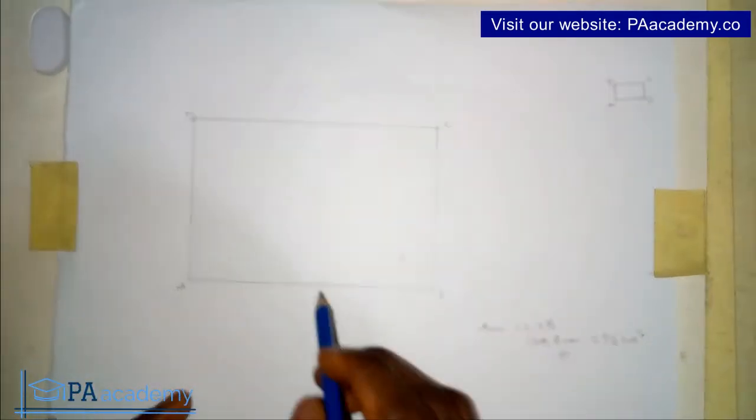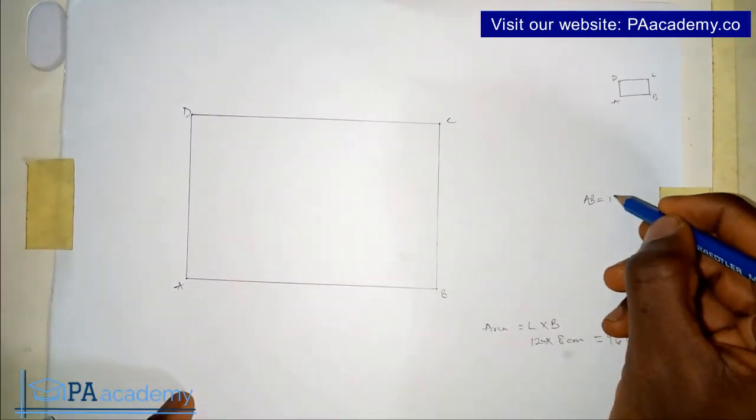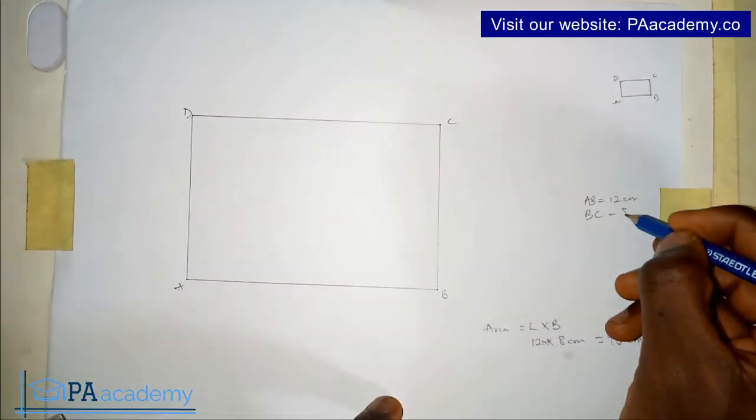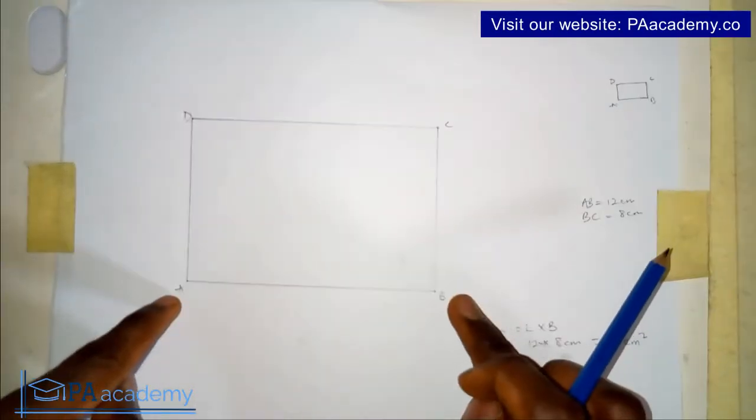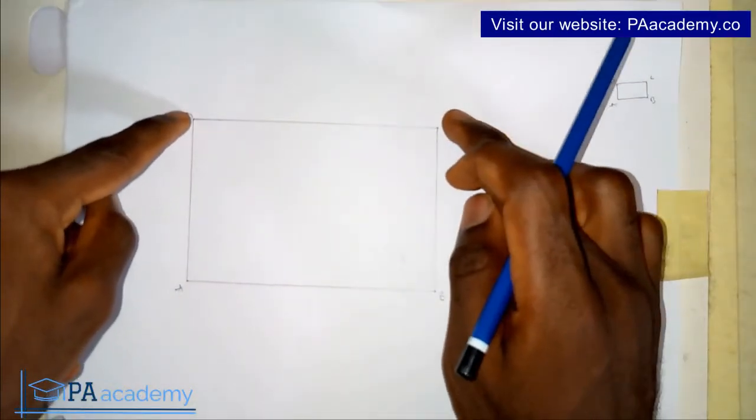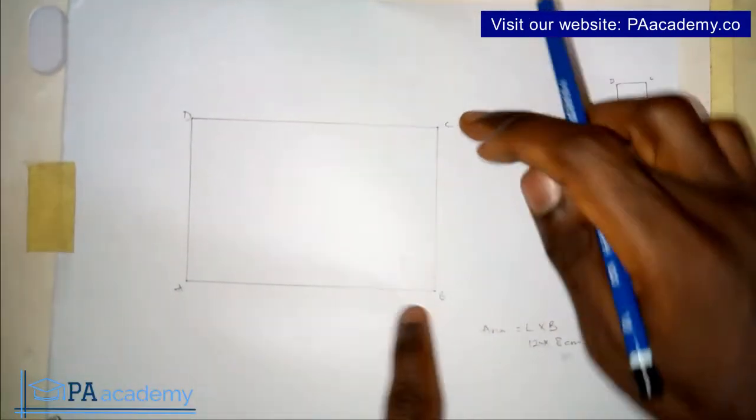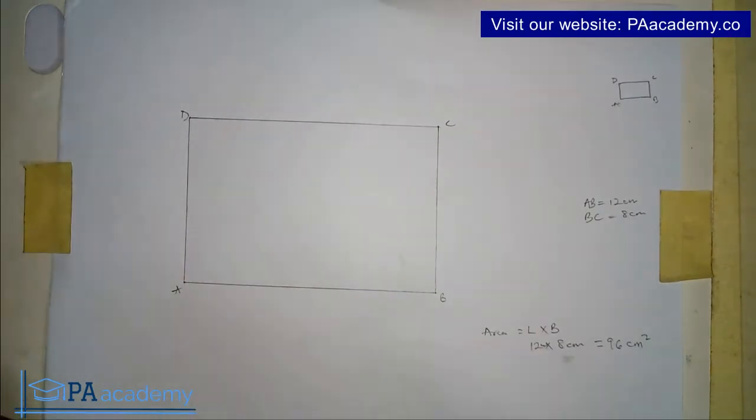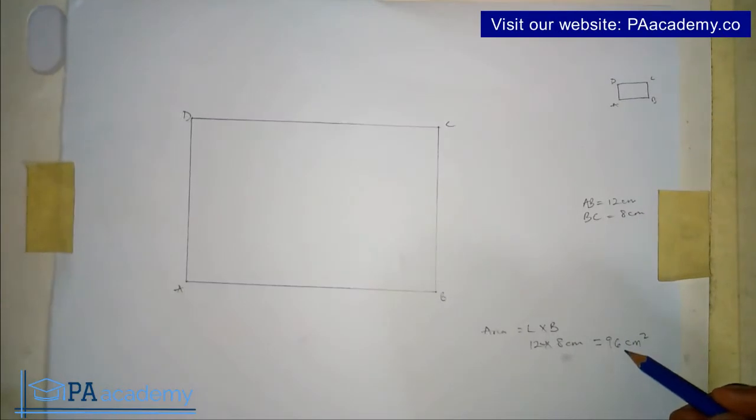Like this one, we have it as A, B is 12 cm. Let me write it there. A, B is equal to 12 cm. And then B, C is equal to 8 cm. Remember in a rectangle, opposite sides are equal. So this, from A to B is 12 cm. Then from D to C is also 12 cm. Same applies here. B to C is 8 cm. From A to D is also 8 cm. So how do we draw another triangle with different sides, but the area will be the same thing as 96 cm². So let's do that.